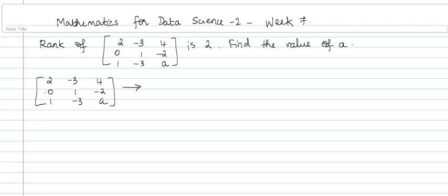Let's make the leading entry in row 1 equal to 1. We divide R1 by 2, giving [1, -3/2, 2]. The second and third rows remain as they are.